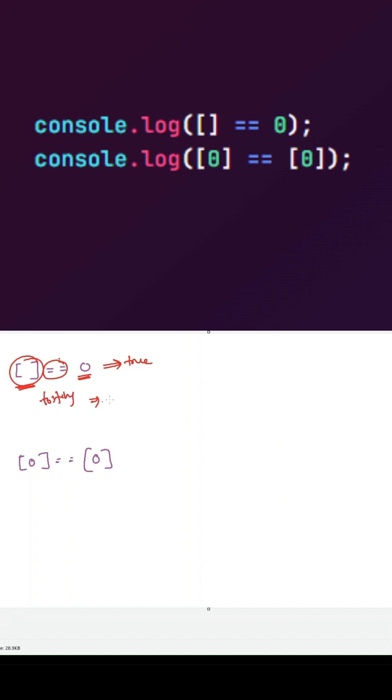So this will convert this array into an empty string. Now our expression will become empty string double equal to 0. Now the numeric equivalent for this empty string will be 0, so our expression will become 0 double equal to 0 which will return as true.